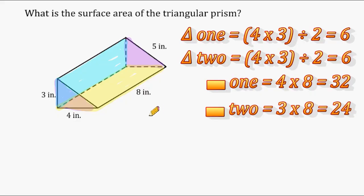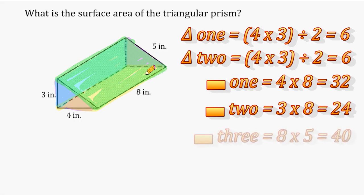Alright, we have one rectangle left, which is this one right here. And the dimensions of this rectangle are 8 by 5, and the product of 8 and 5 is 40.